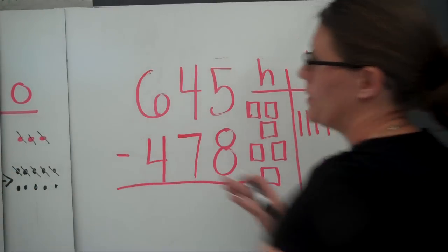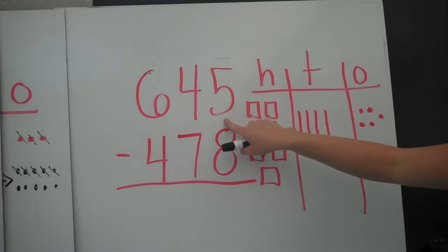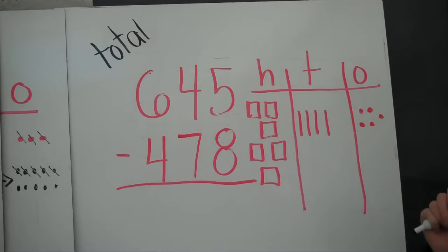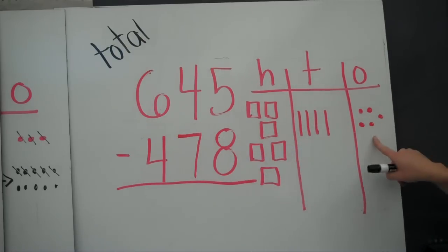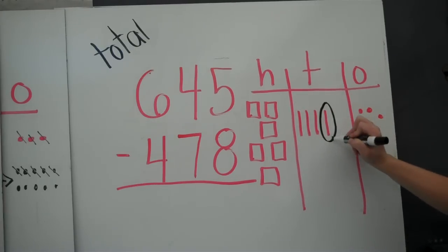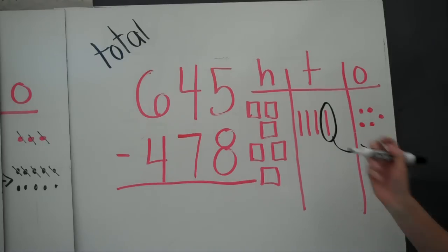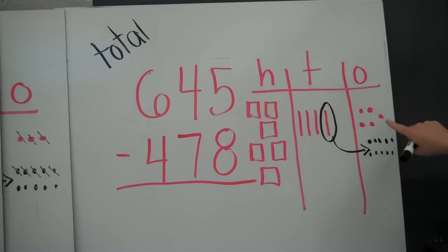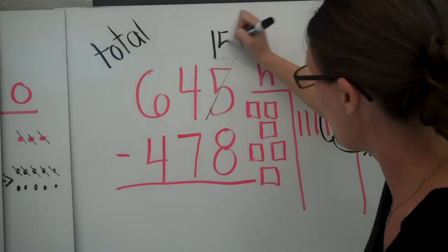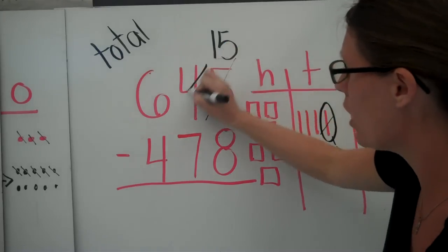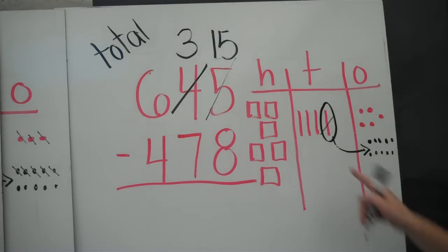Let's try one more before you try two on your own. 645 — remember, that's my total. I'm taking away from my total 478. Again, starting in the ones: I have 5 minus 8. I can't take away 8. So I'm going to rename a 10 — I'm going to change how it looks. Instead of being a 10, I'm going to make it into ones. Now I have 5 plus 10, which is 15. I no longer have just 5 ones, I have 15 ones. I no longer have 4 tens, I only have 3, so I'm going to cross off the 4 and make it a 3.